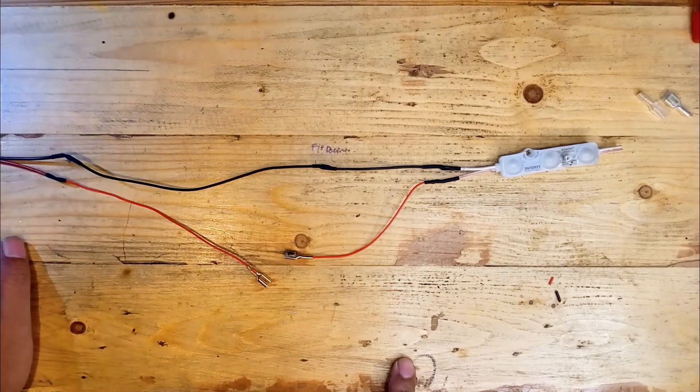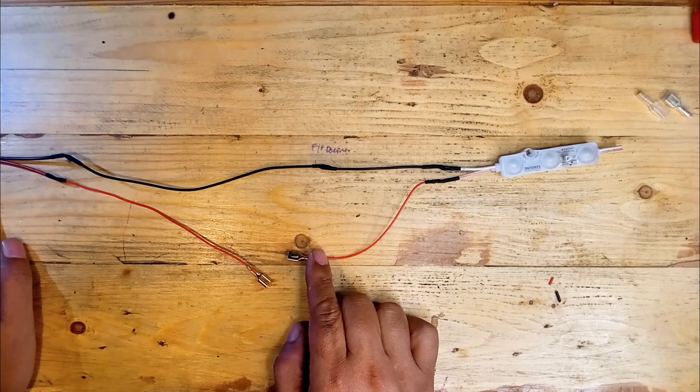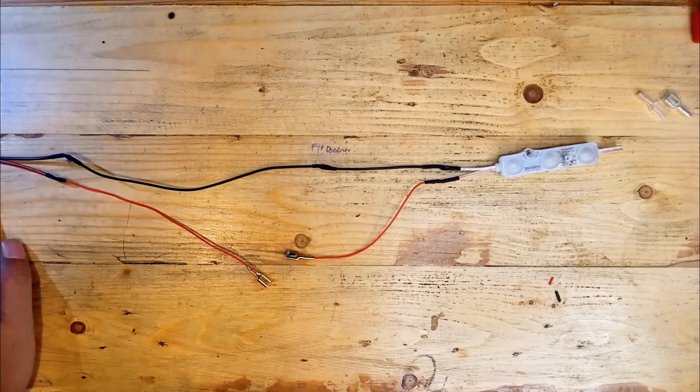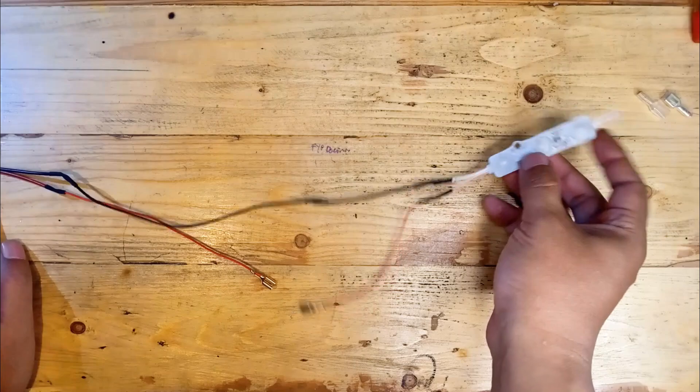Today I'm going to show you how to connect a basic DC switch circuit. This is a simple setup you can use to control a 12 volt LED light or even a small motor. Let's get started.